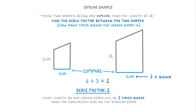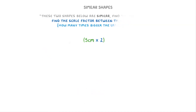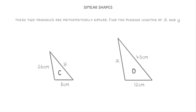A scale factor of two means that every length on our larger shape will be two times bigger than the equivalent side on our smaller shape. So if we're looking for x and we know that its equivalent side on the smaller shape is this five centimeter side, then all we have to do is multiply the five centimeters by two to find that x must be 10 centimeters long.